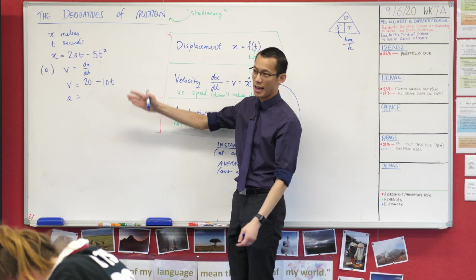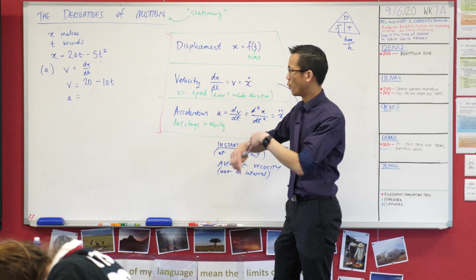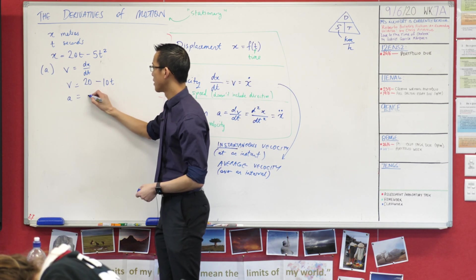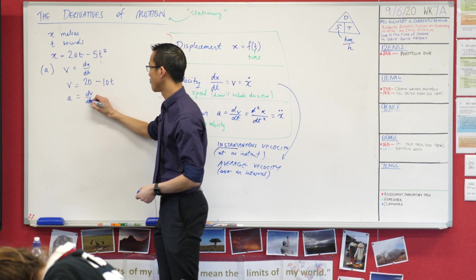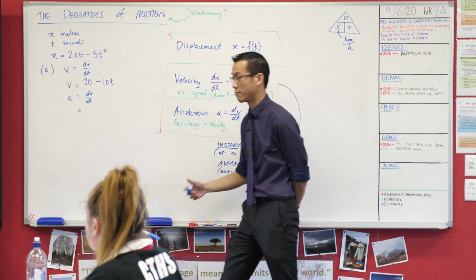And then to do the next part to get to acceleration, I just need to take that guy and differentiate again. This is dv/dt, just the line above. And you guys can go ahead and tell me what the derivative is. It's just minus 10, cool.